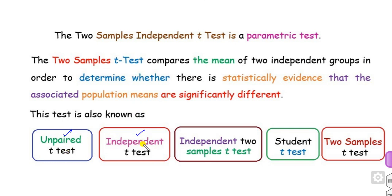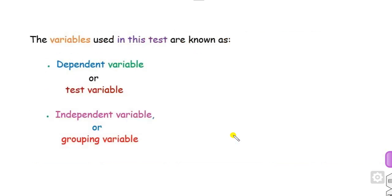This two-sample T-test is also called the unpaired T-test, the independent T-test, the independent two-sample T-test, the Student T-test, or simply the two-sample T-test. All of these refer to the same two-sample independent T-test.